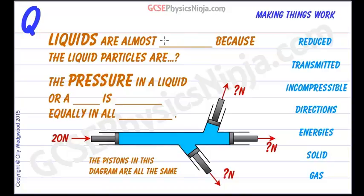Liquids are almost incompressible because the liquid particles are very close together. This means that it's very difficult to try and squeeze a liquid into a smaller volume